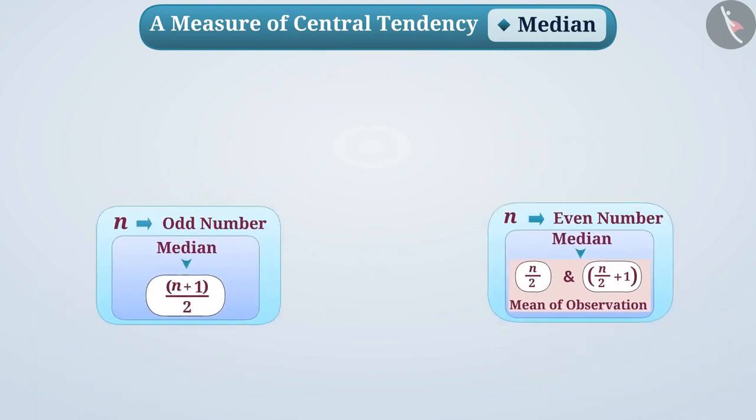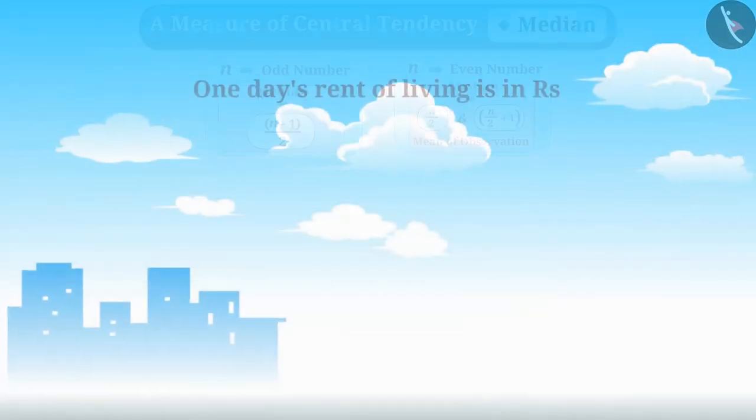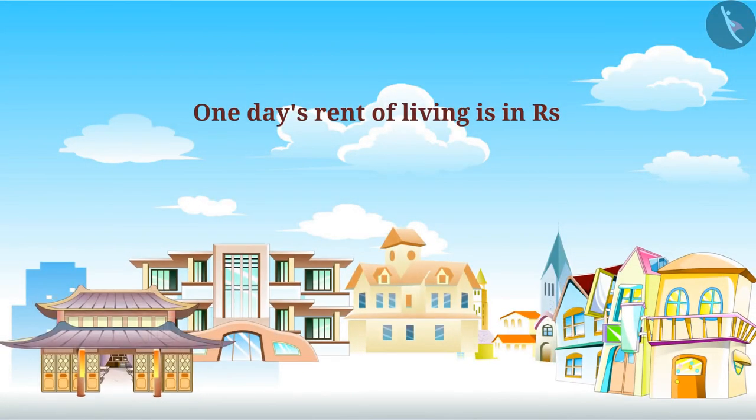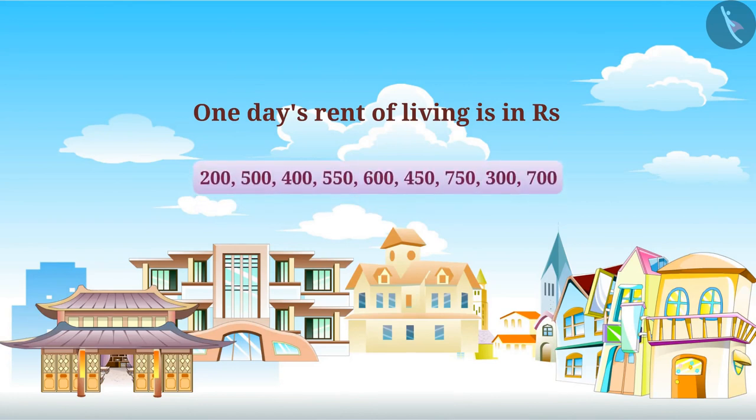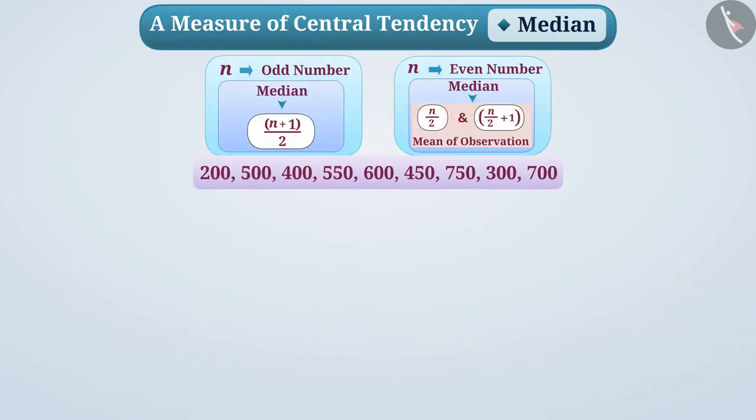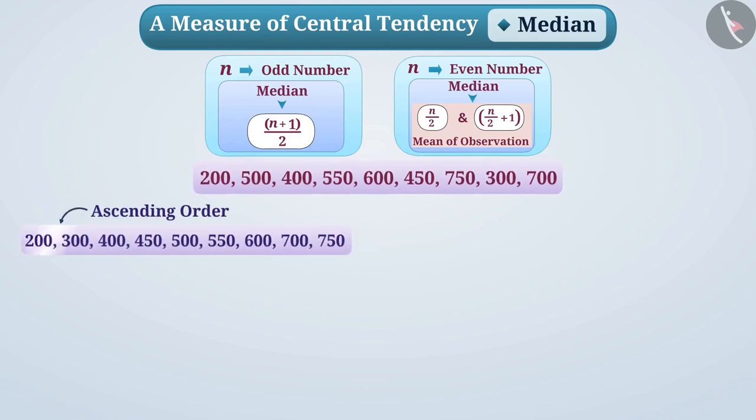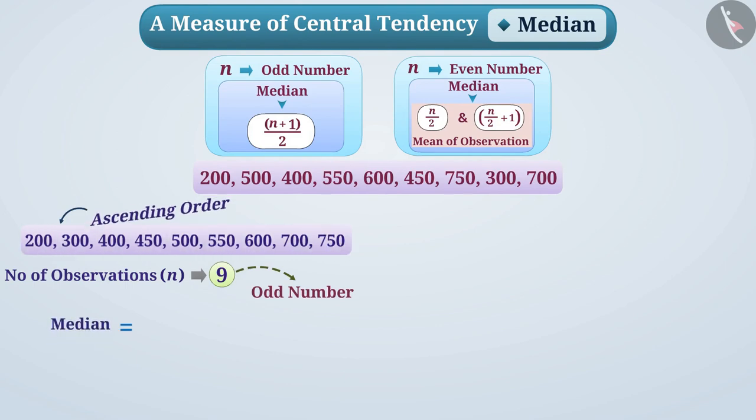For example, suppose one day's rent of living in different hotels in a city is in rupees like this. Let's arrange them in ascending order. Here, the number of observations is 9, which is an odd number. So, the median of these data arranged in ascending order will be 9 plus 1 divided by 2, that is 5th observation, that is 500.